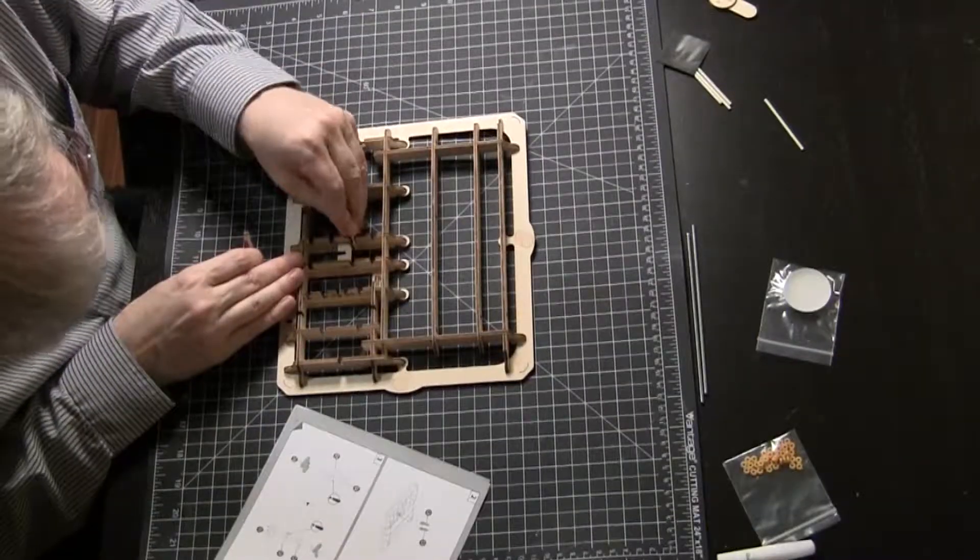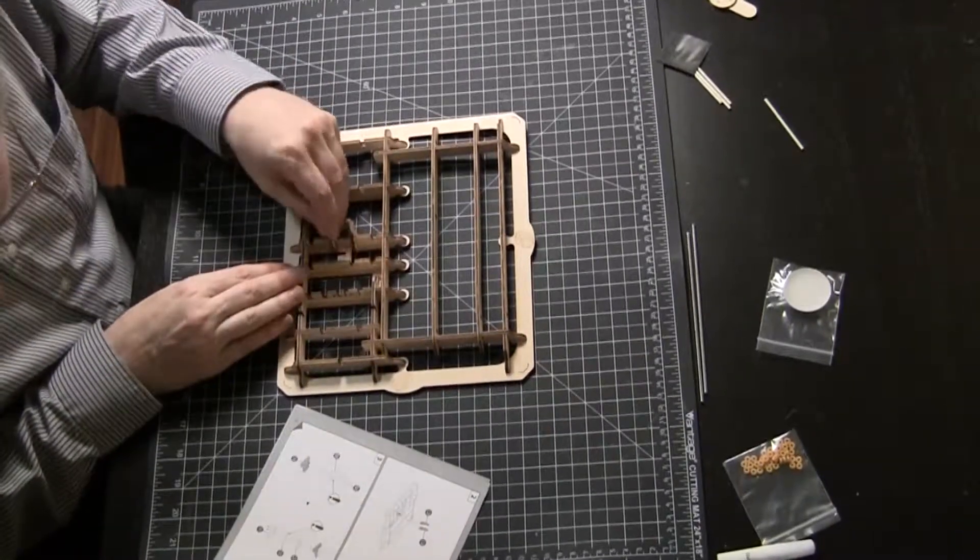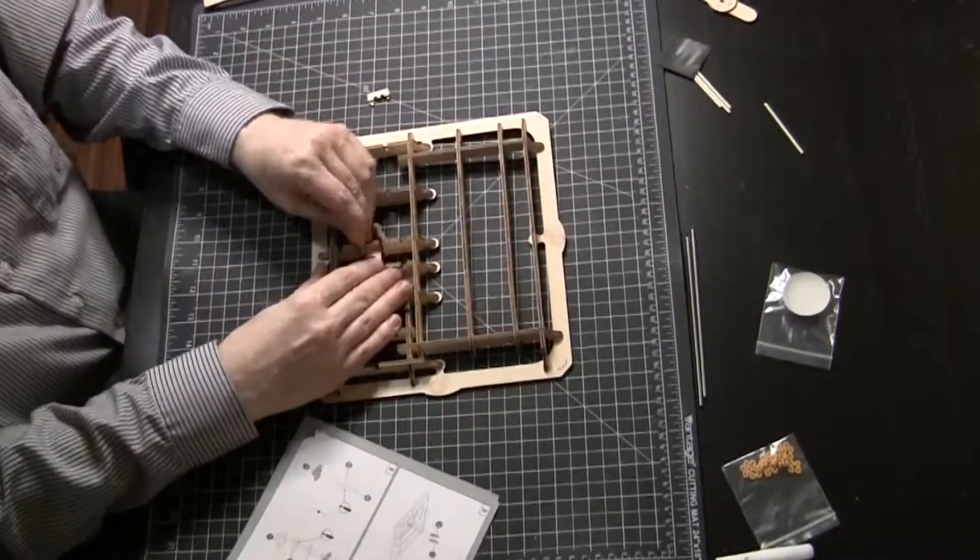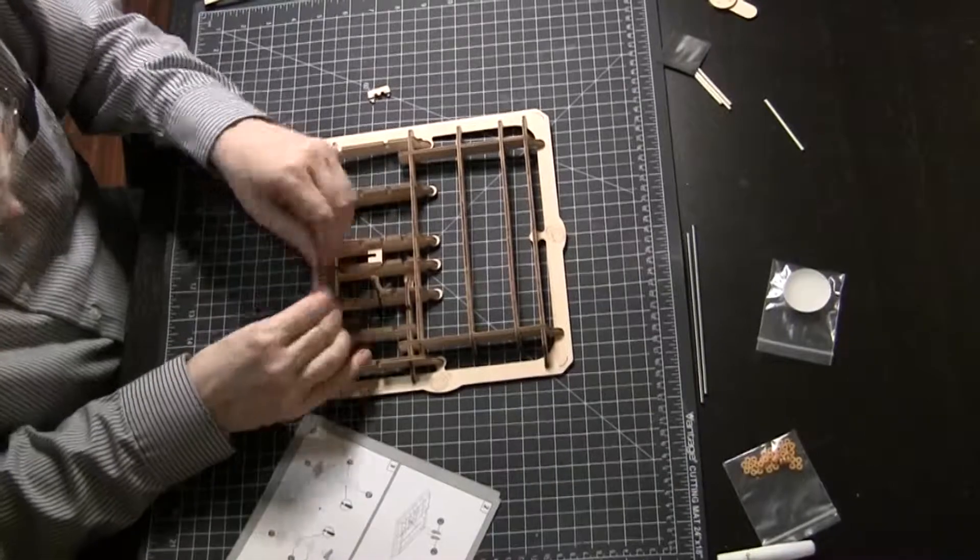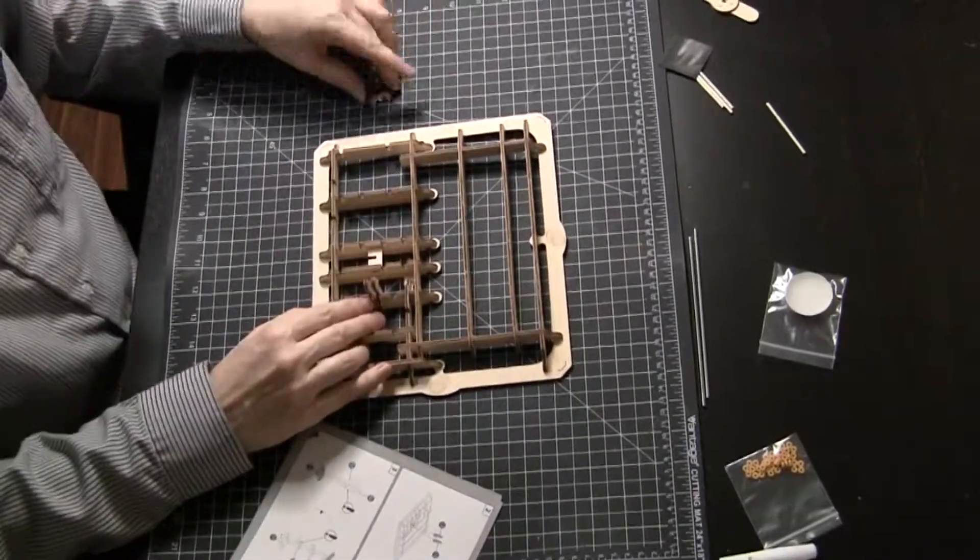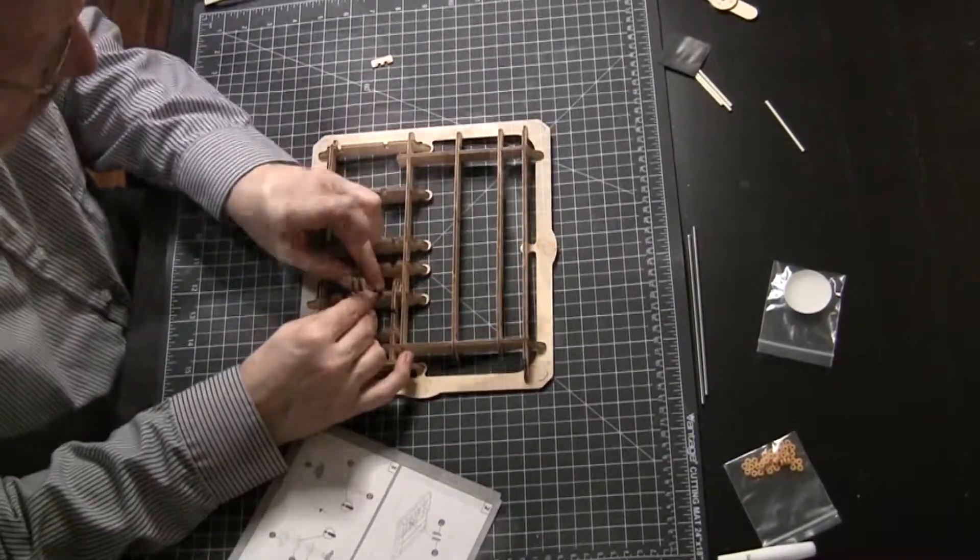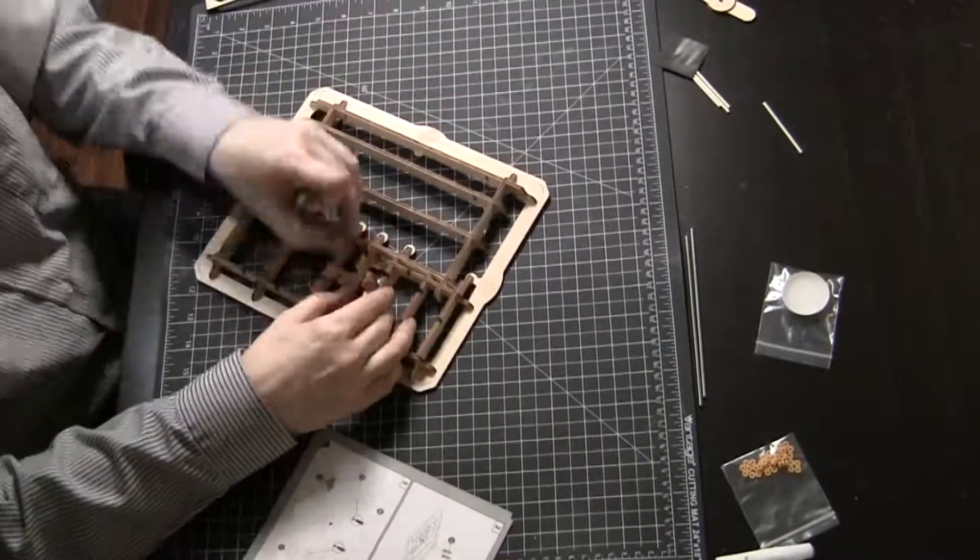Next, add two post pieces that will hold part of the lifting mechanism. Oops! Ed put them in the wrong place. Fortunately, no glue was used. Now the pieces fit like they should.